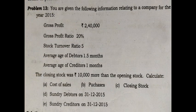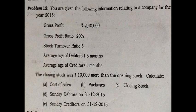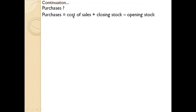Next, find purchases. There is no direct information regarding purchases in the question, so we use the cost of sales equation: cost of sales equals opening stock plus purchases plus direct expenses minus closing stock. Rearranging: purchases equals cost of sales plus closing stock minus opening stock. That gives 9,60,000 plus 1,97,000 minus 1,87,000, which equals 9,70,000.